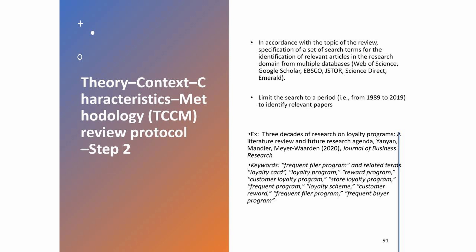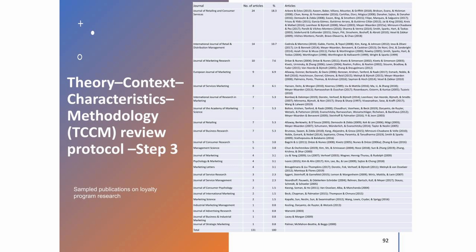The time period chosen depends on the number of articles published. If a lot of articles have been published, it makes sense to look only over the last five to ten years. If there are few articles, it makes sense to extend the period. For example, in an article about loyalty programs published in general business research, we used terms like frequent flyer program and related terms such as loyalty card, loyalty program, reward program, customer loyalty program, store loyalty program, frequent program, loyalty scheme, customer reward, and so on, in order to identify relevant papers.